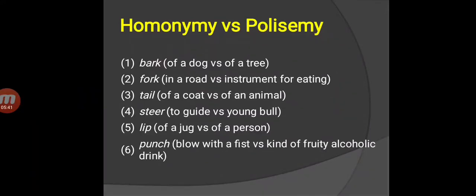Bark of a dog and of a tree - they are homonymy. Fork in a road and instrument for eating - they are polysemy. Tail of a goat versus of an animal - they are polysemy. Steer to guide and steer for young bull - they are homonymy. Lip of a jug and lip of a person - they are polysemy. And the last is punch, which means blowing with a fist and punch for kind of fruity alcoholic drink - they are homonymy.